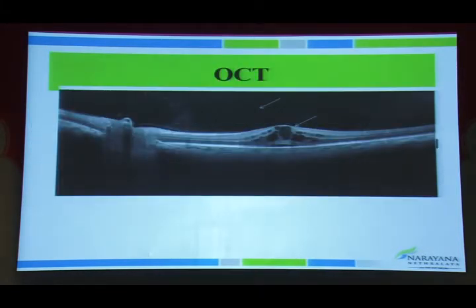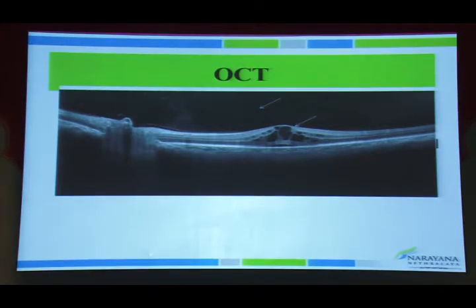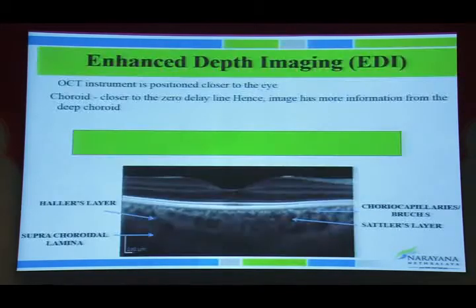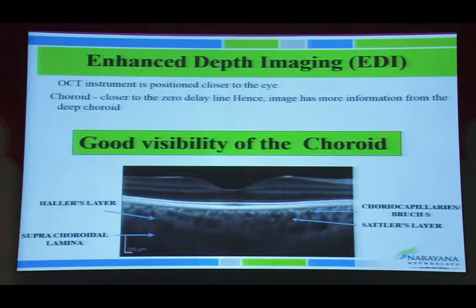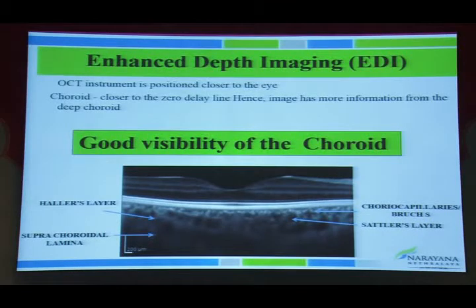OCT helps to study changes in the vitreous, retina, and choroid. The most common use is quantification of cystoid macular edema and titration of treatment. Enhanced depth imaging has helped understand choroidal pathology better by clearly delineating all choroidal layers.